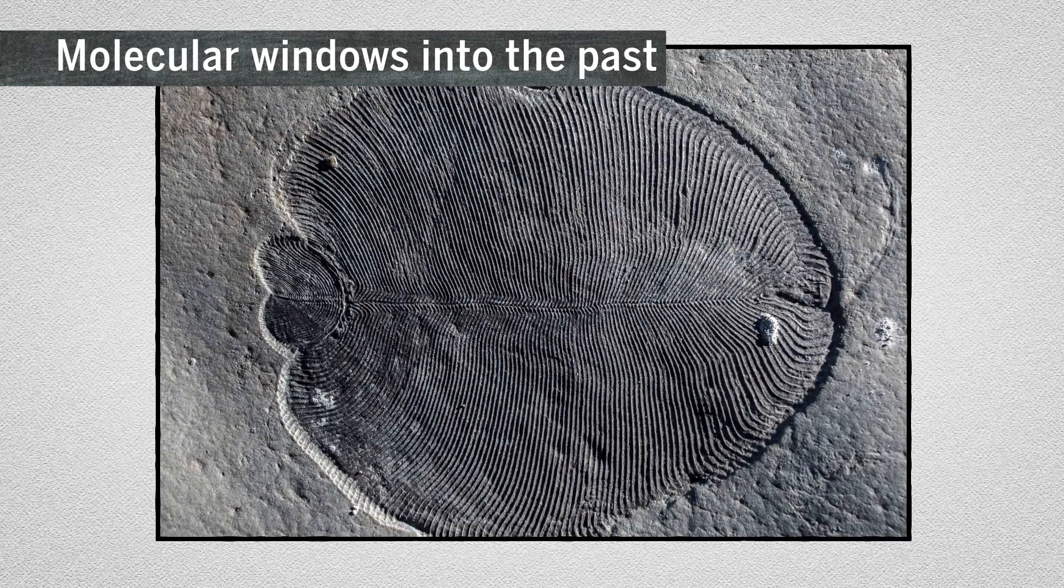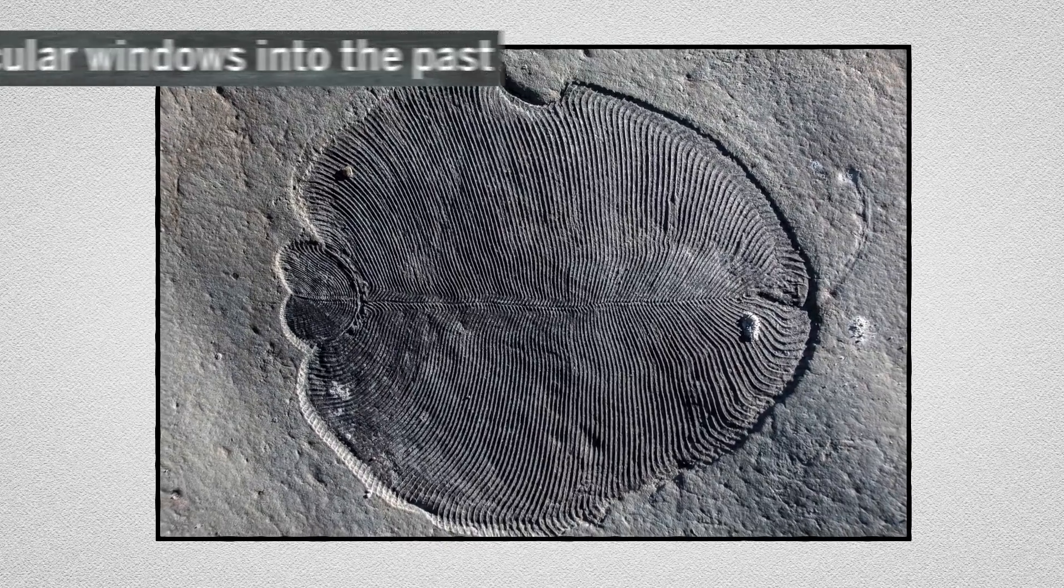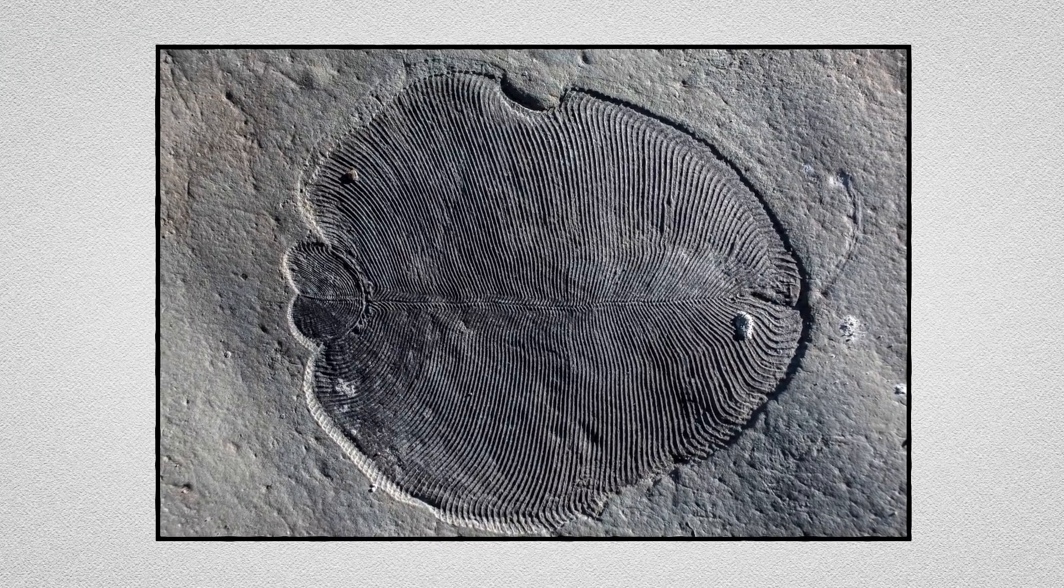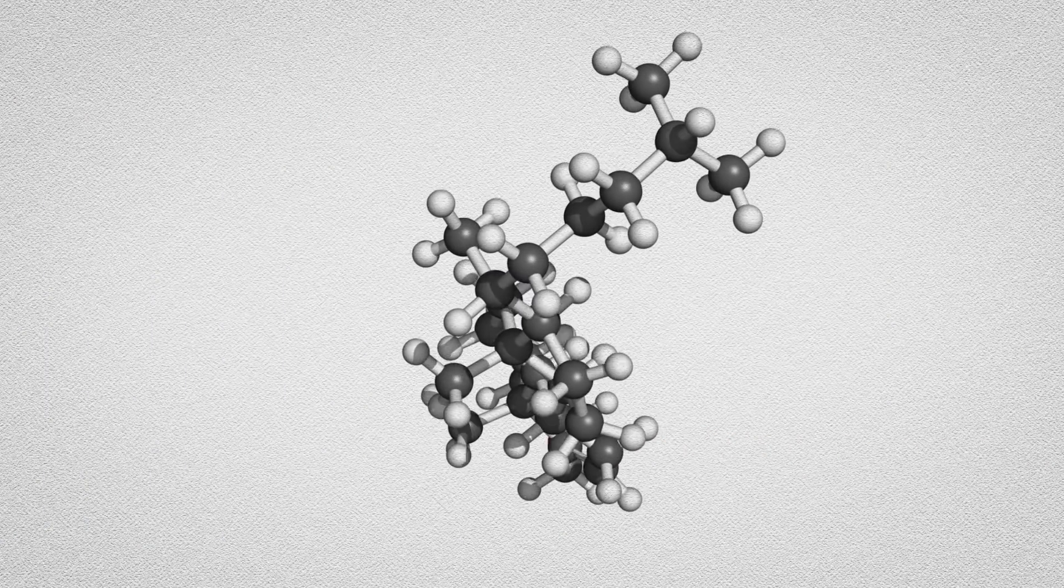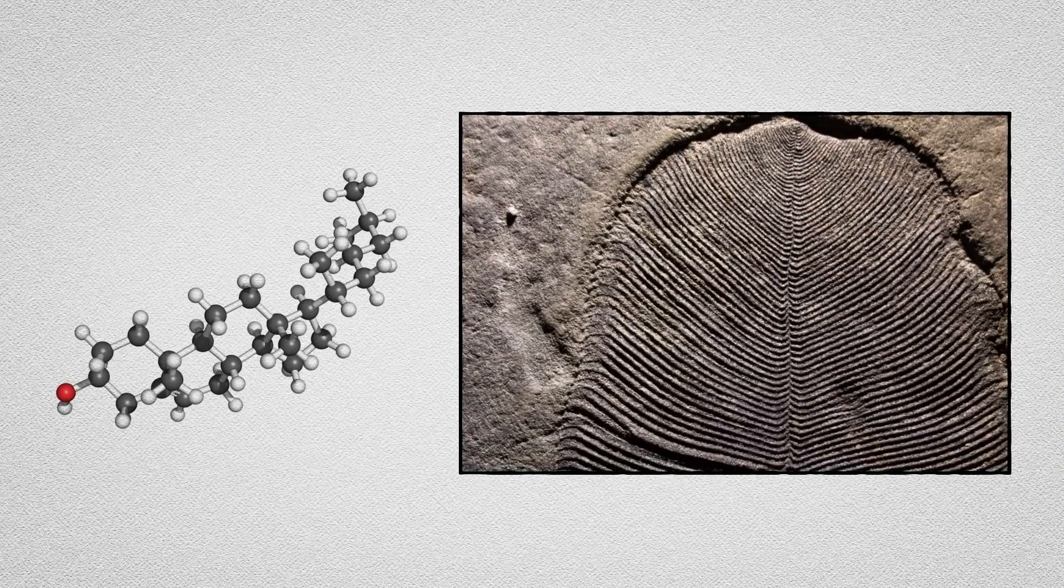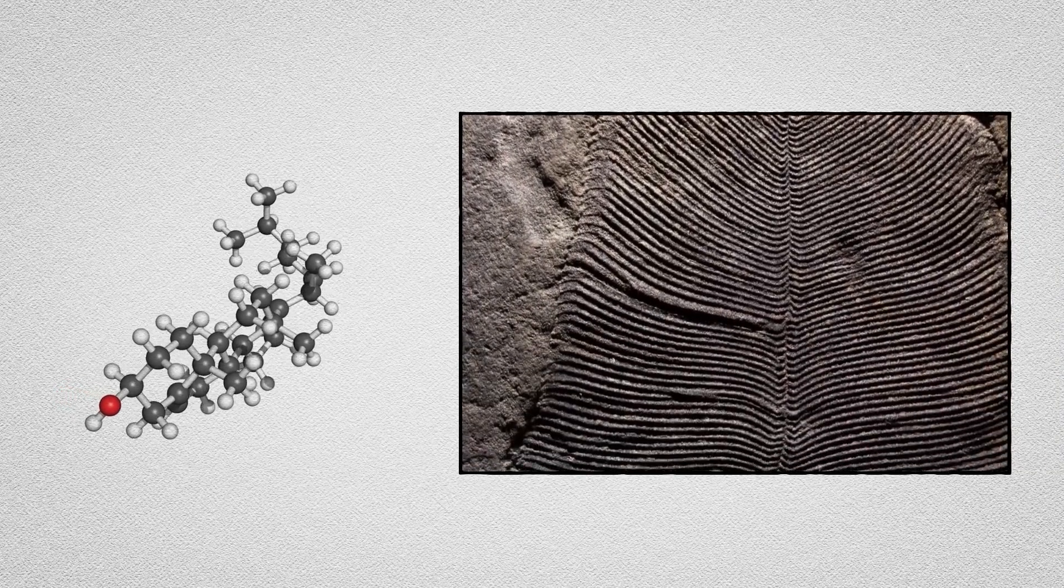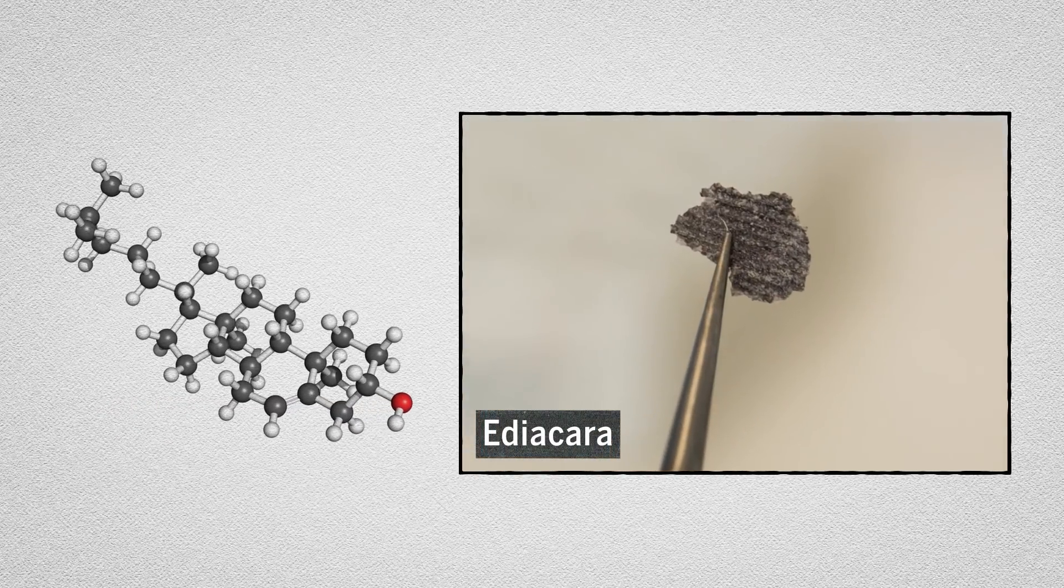This ancient fossil is more than half a billion years old. But was it an animal? An intriguing find suggests it was. Scientists discovered traces of cholesterol, a signature of animal life, associated with these fossils. The feat indicates the fossils, which belong to a mysterious class called Ediacara, are some of Earth's earliest animals.